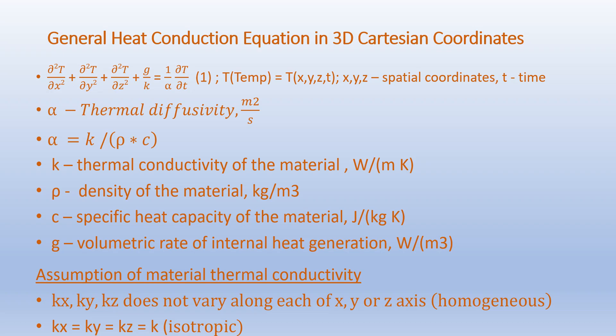Alpha is the thermal diffusivity of the material, given in meter squared per second, defined as α = K/(ρC). Here K is thermal conductivity in watts per meter Kelvin, ρ is density in kilograms per meter cube, and C is specific heat in joules per kilogram Kelvin. G is the volumetric rate of internal heat generation in watts per meter cube. We assume the material thermal conductivity is isotropic and homogeneous, so K is uniform in the domain.